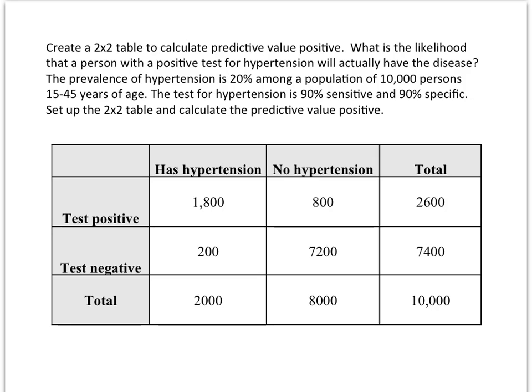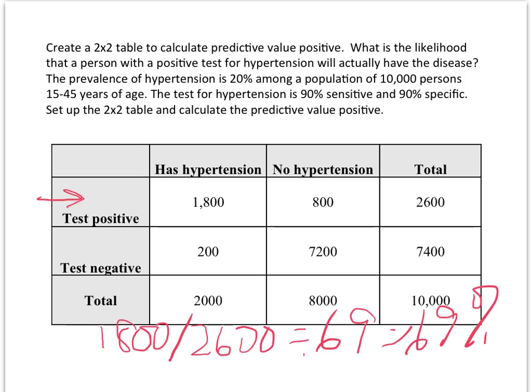At this point we then want to know the positive predictive value which is the probability of the person having hypertension in the situation where they have a test that's positive. So among those who test positive, 1,800 with hypertension over a total of 2,600 equals 0.69 or 69% positive predictive value.